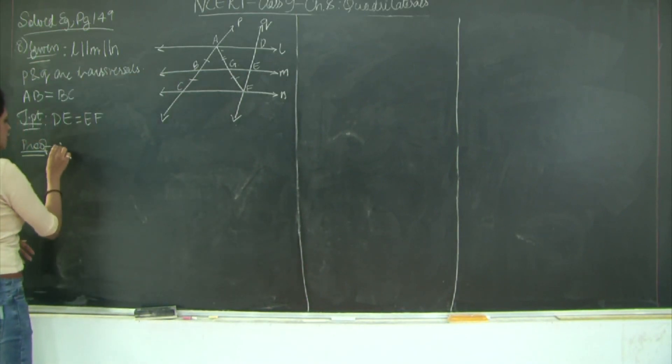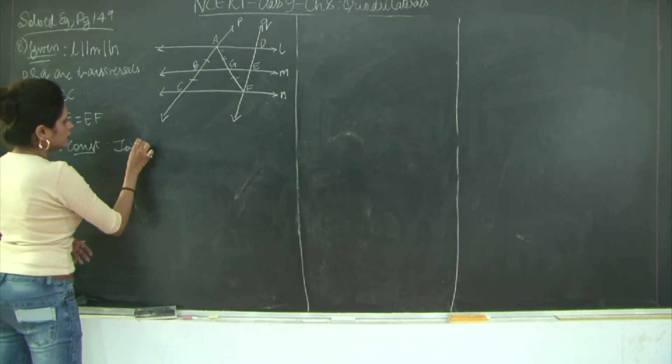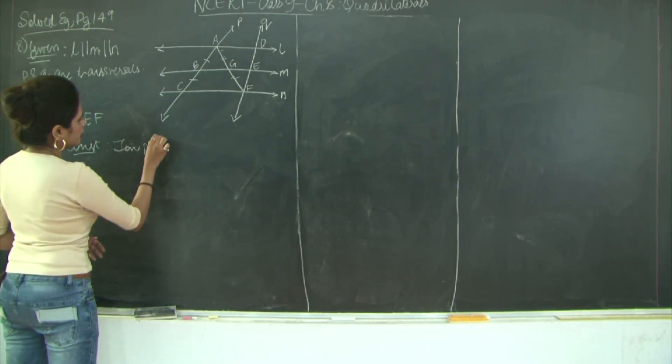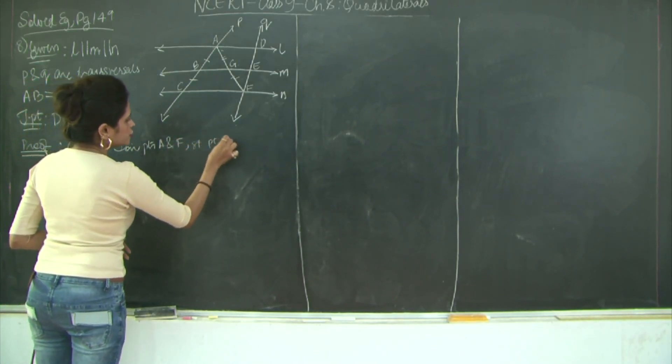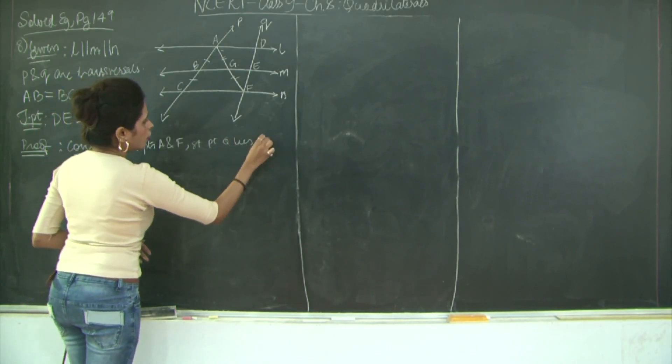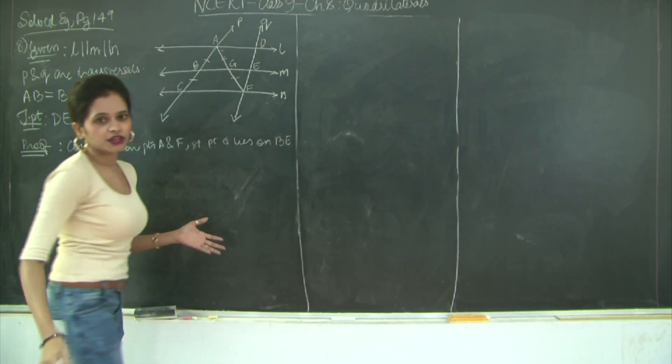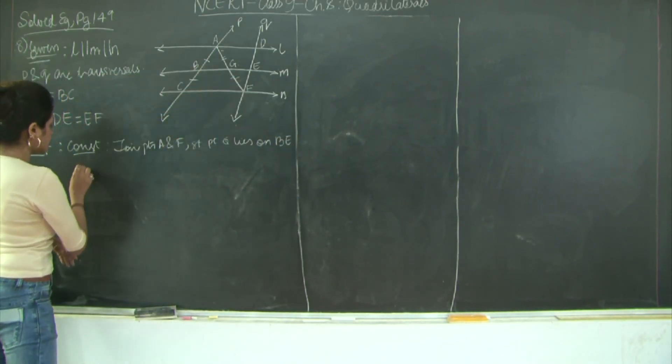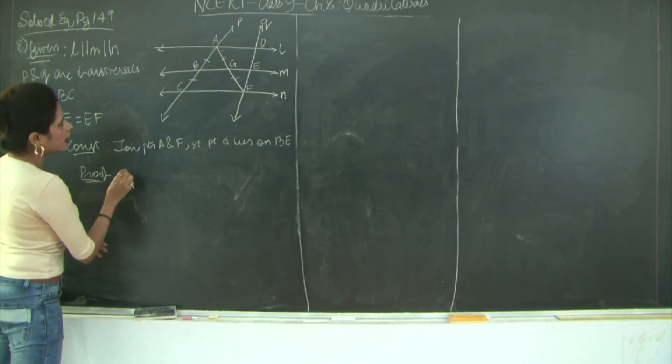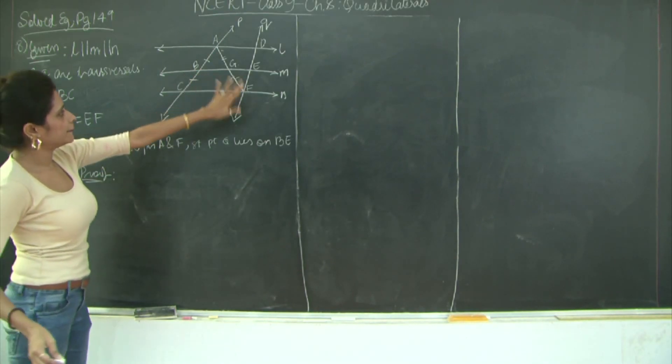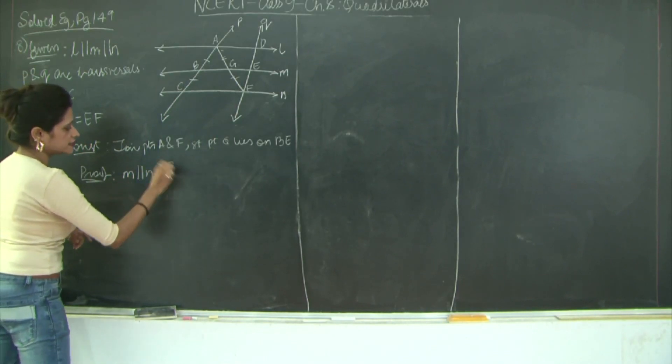So first I will write my construction. Join points A and F such that point G lies on BE, on line M. So now I will start with my proof. Let us first prove that BG is parallel to CF. M is parallel to N. This is given.